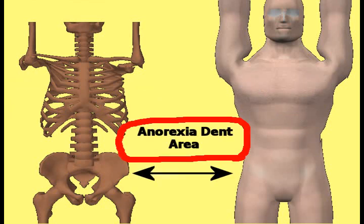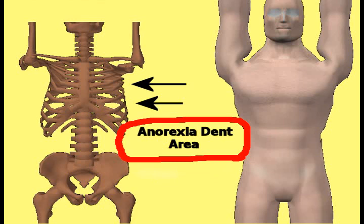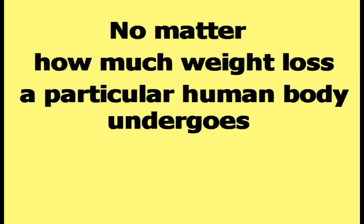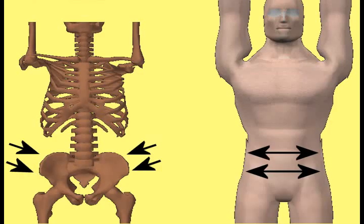The side of the torso below where anorexia dent appears is where the pelvic bones are located. Like the bones of the ribcage, the pelvic bones prevent the flesh and muscle covering them from shrinking in towards the spine by any appreciable amount. No matter how much weight loss a body undergoes, the bones of the pelvis will keep that area of the torso a mostly constant width.